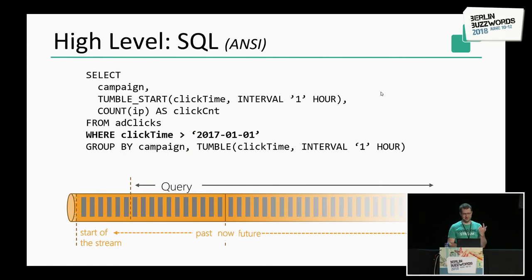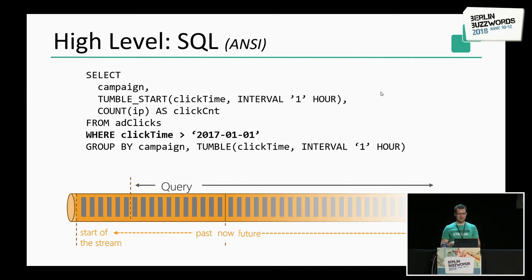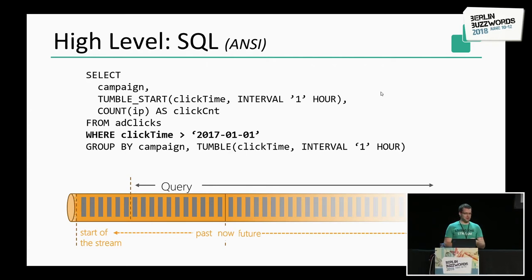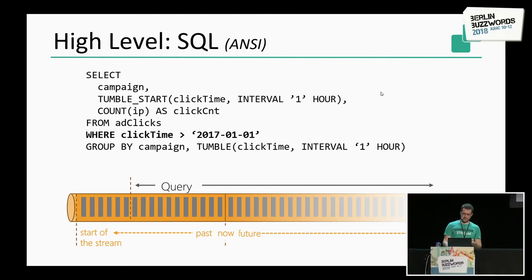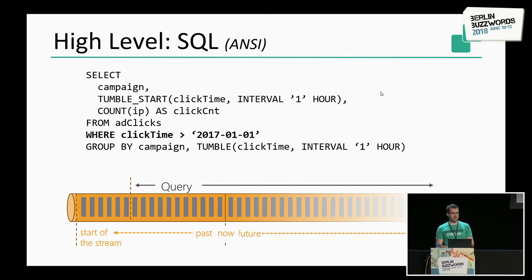On a higher level, there is SQL — almost standard SQL, except the tables are dynamic because you work on a stream and you don't know when the stream will end. It is essentially standard SQL with some extensions like windows — in this case a tumbling window. You also have access to different time notions because of the windows: processing time or even event time.